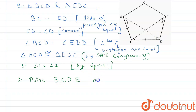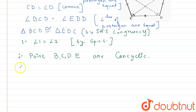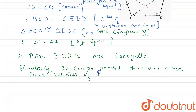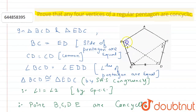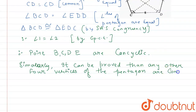Similarly, it can be proved that any other four vertices of the pentagon are concyclic — for example, vertices A, B, C, E or A, B, D, C. So any four vertices of a pentagon are concyclic.